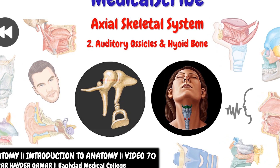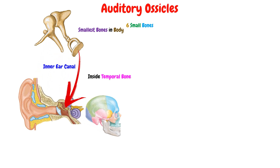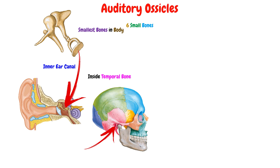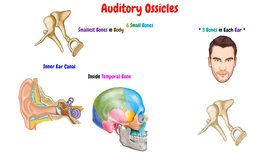First, we have the auditory ossicles. These are six very small bones considered the smallest bones in the human body. They are found within a small cavity, which is the inner ear canal inside the temporal bone of the skull. These six bones are distributed as three bones in each ear, and these three bones are the malleus or the hammer, the incus or the anvil, and the stapes or the stirrup.